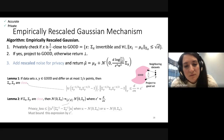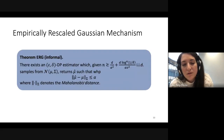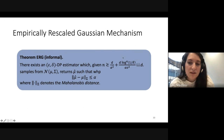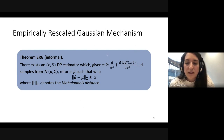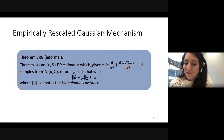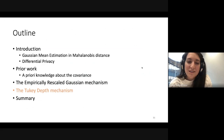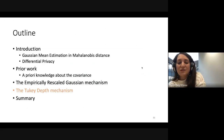This first approach doesn't quite achieve the sample complexity we wanted — the non-private term has a slightly worse dependence on the privacy parameter epsilon and some additional log factors. The promised optimal sample complexity is achieved by the second mechanism: the Tukey Depth mechanism.